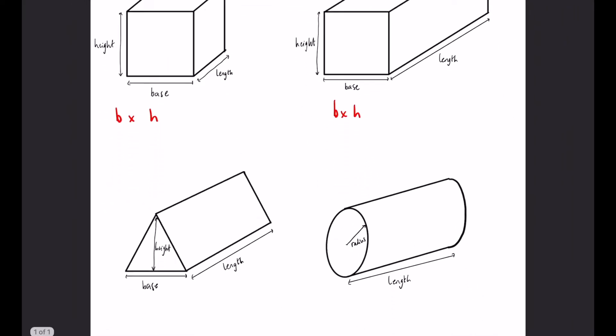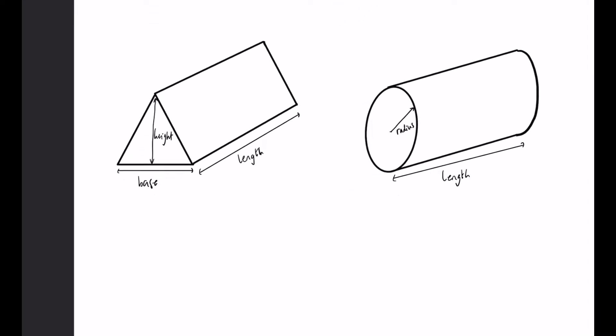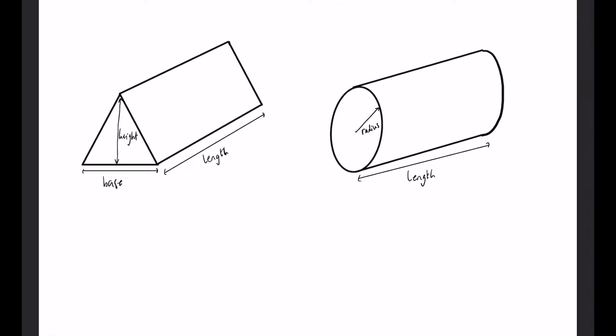Now, on the other two, slightly more involved but definitely something we've seen before. For the triangles, we do base times height divided by 2, and for the circle, we would do pi times the radius squared, so πr².